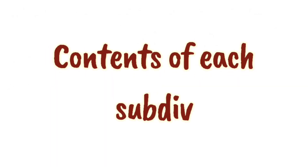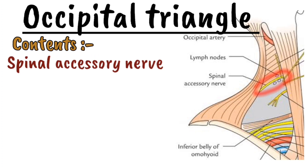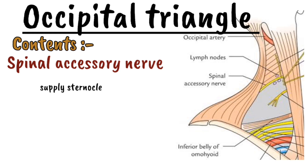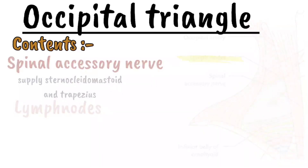The contents of the occipital triangle, which is above the omohyoid, include the spinal accessory nerve. It crosses the posterior triangle by running downwards from the posterior border of the sternocleidomastoid to the anterior border of the trapezius muscle along the levator scapulae. This is why both the sternocleidomastoid muscle and trapezius muscle are supplied by it. Some lymph nodes are also present around it.